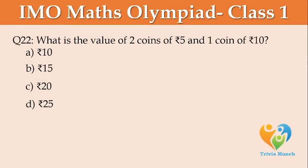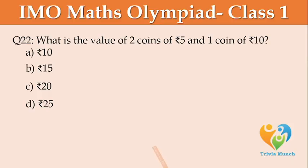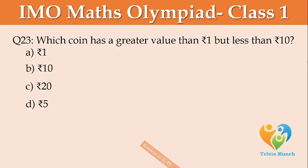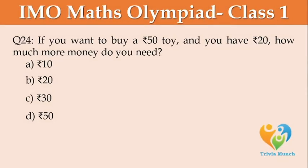What is the value of 2 coins of 5 rupees and 1 coin of 10 rupees? Option A: 10 rupees, Option B: 15 rupees, Option C: 20 rupees, Option D: 25 rupees. Which coin has a greater value than 1 rupee but less than 10 rupees? Option A: 1 rupee, Option B: 10 rupees, Option C: 20 rupees, Option D: 5 rupees. If you want to buy a 50 rupee toy and you have 20 rupees, how much more money do you need? Option A: 10 rupees, Option B: 20 rupees, Option C: 30 rupees, Option D: 50 rupees.